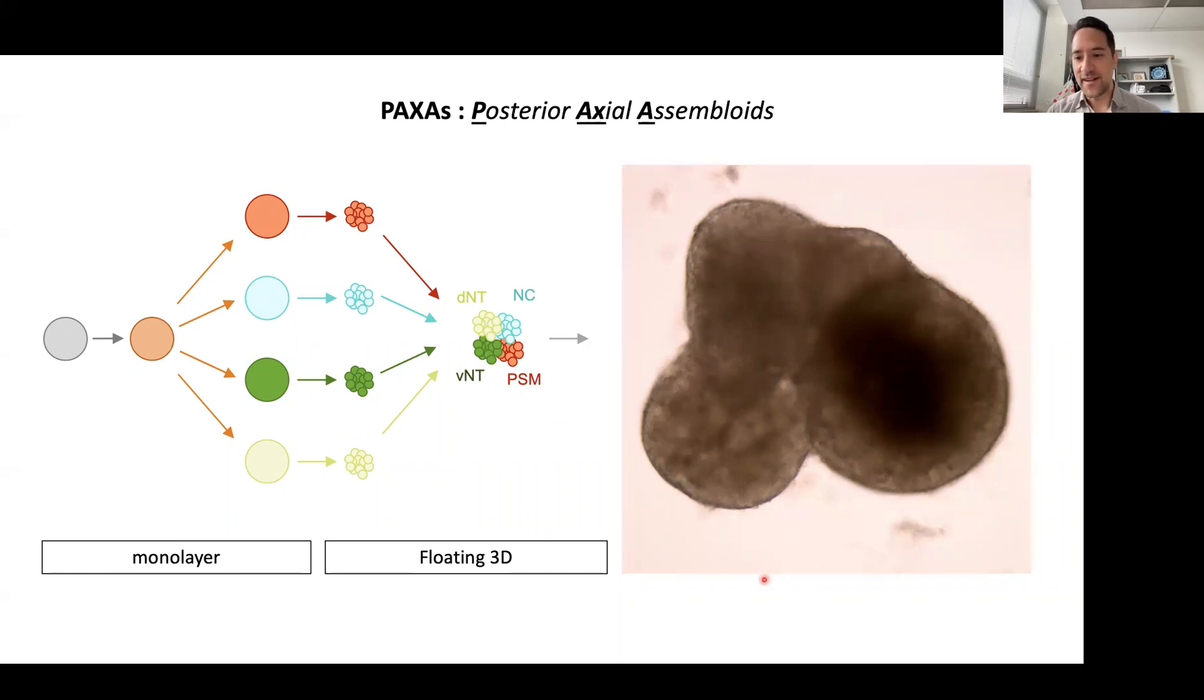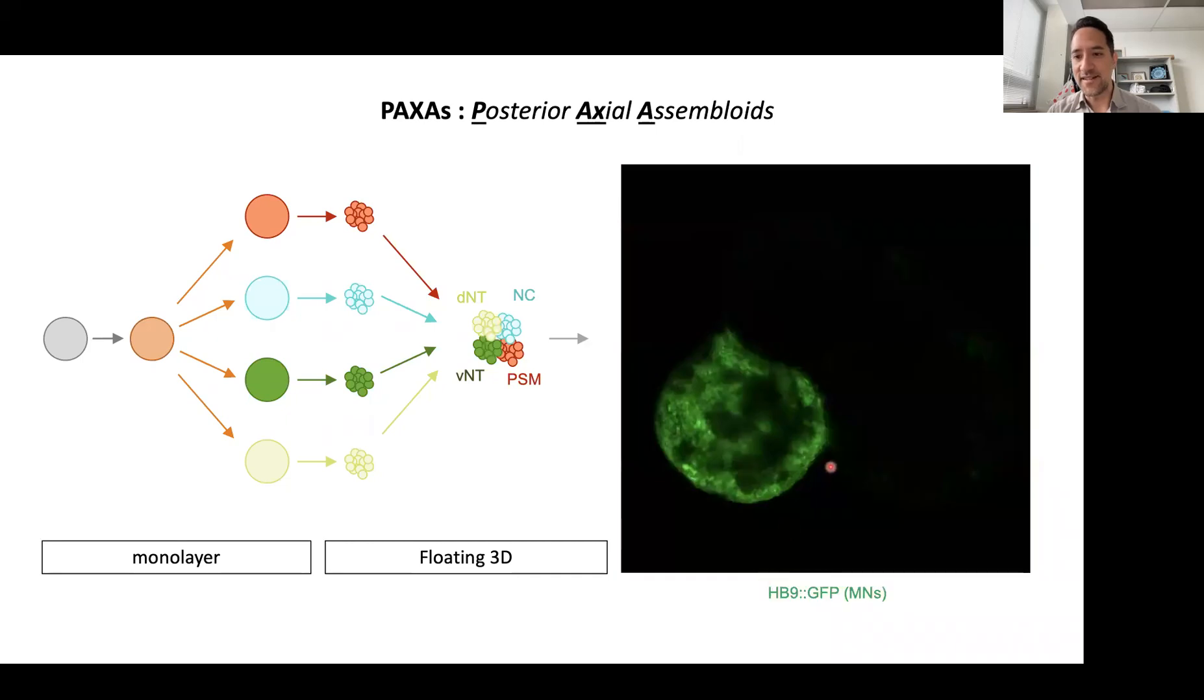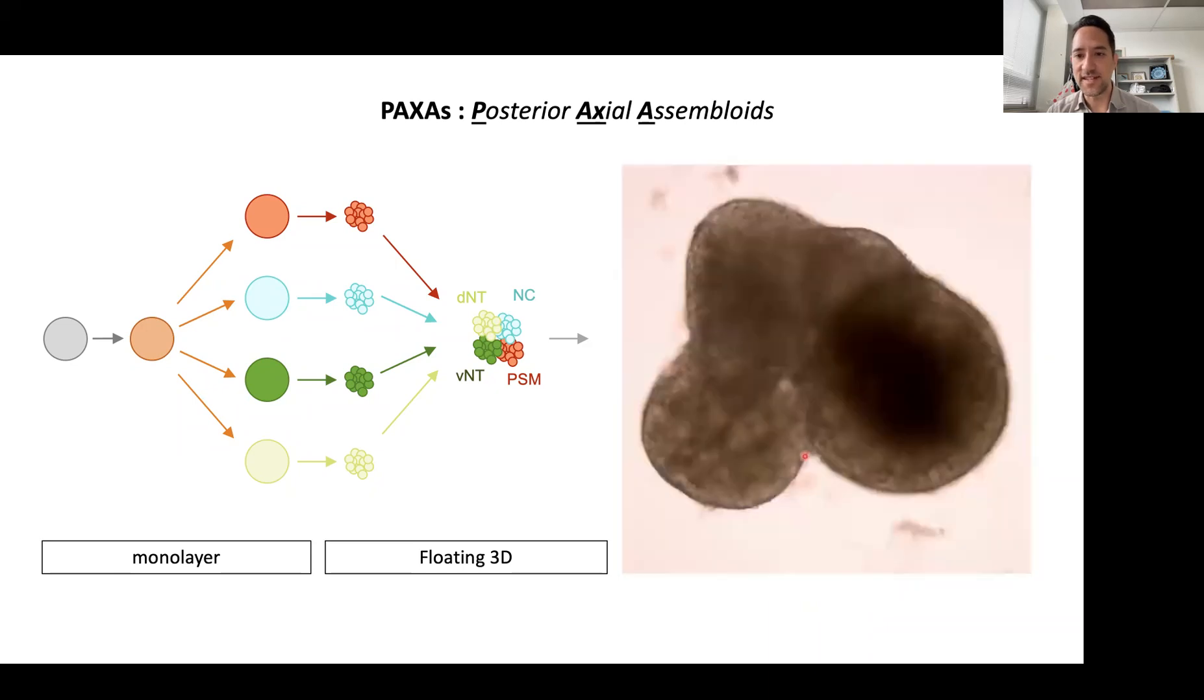In cases where we use an iPS line that has a GFP under the control of a motor neuron transcription factor, Hb9, we can see that we get a large number of motor neurons expressed in this ventral component of the assembloid.